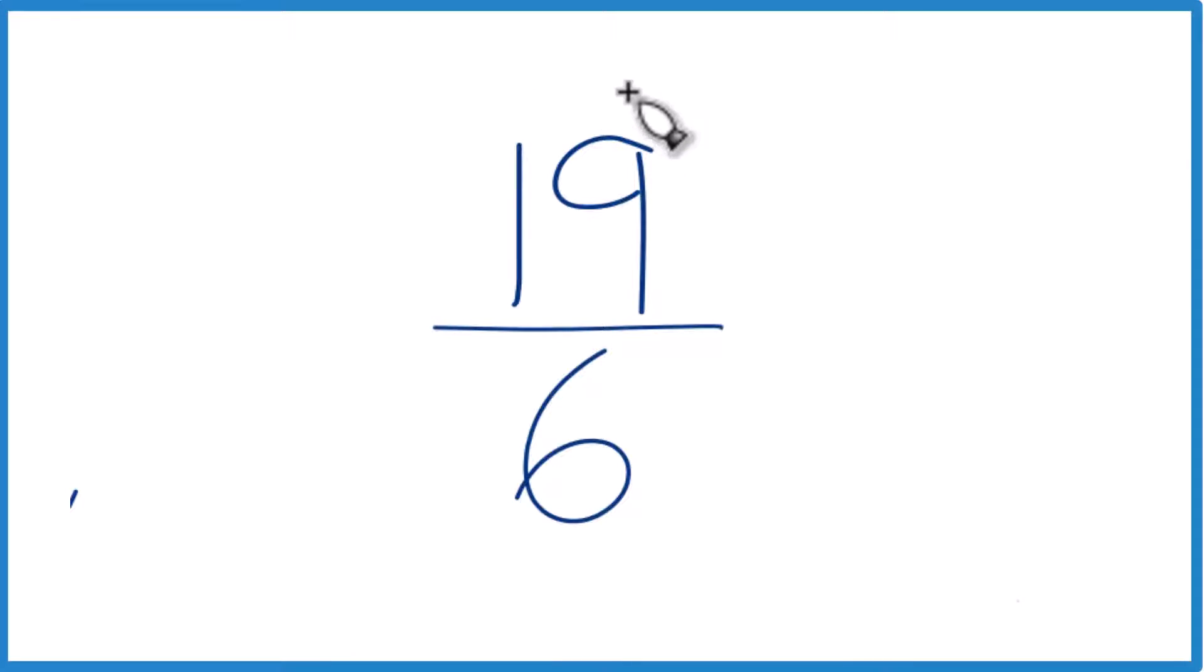Okay, let's write the fraction 19/6 as a mixed number. Right now it's an improper fraction. That's because the numerator is bigger than the denominator. So let's get it to a mixed number.